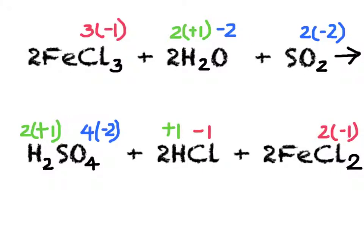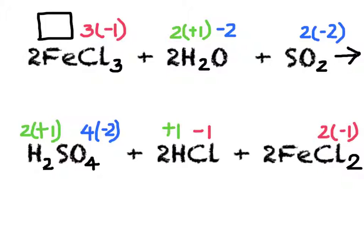Let's do another example, again asking if this is a redox reaction or not. I've already filled in some of the oxidation numbers. The chlorine, because it's in a substance that only has two different types of atoms, will always have a charge of minus 1. There are three of them within that substance, so that's why we're going to be multiplying it by 3. Note that the mole ratio of 2 is not taken into account when using oxidation numbers. The hydrogens always have an oxidation number of plus 1, and the oxygens always have an oxidation number of minus 2. Now we can go ahead and determine the oxidation numbers of iron in iron(III) chloride, sulfur in sulfur dioxide, sulfur in sulfuric acid, and iron in iron(II) chloride.